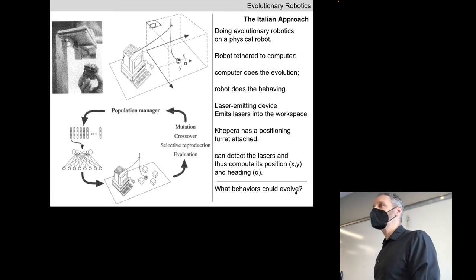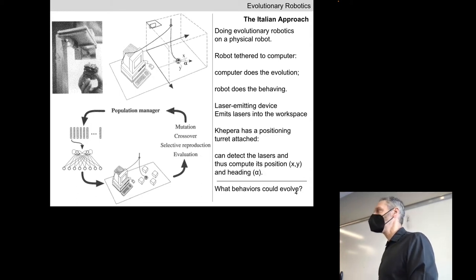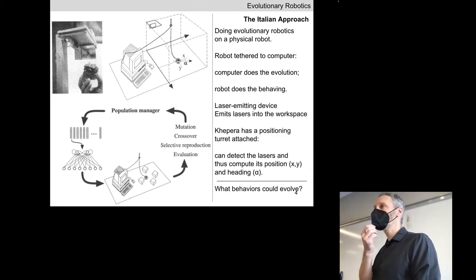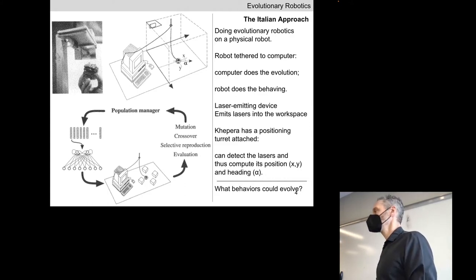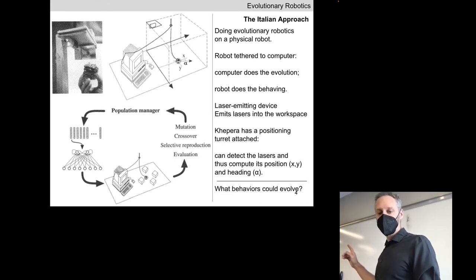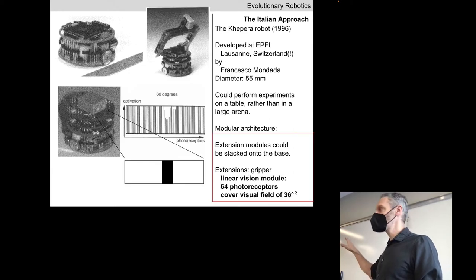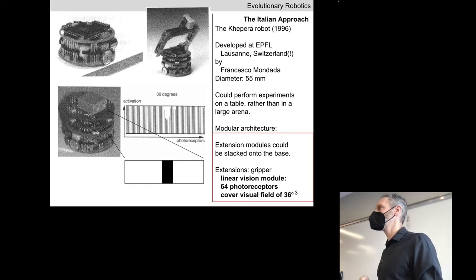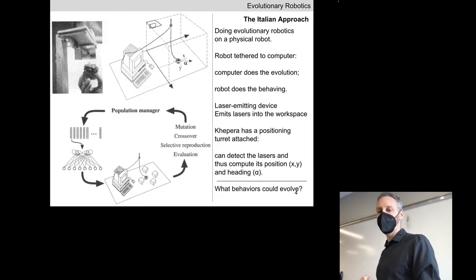Imagine you time-traveled back to the mid-1990s and had control over this desktop computer — you could write various evolutionary algorithms and different fitness functions for this robot. What kinds of behaviors might you be able to evolve for this admittedly humble robot? Assume it has some basic information about proximity: it sends out infrared beams in front of it and detects the time interval for those beams to go out and come back.